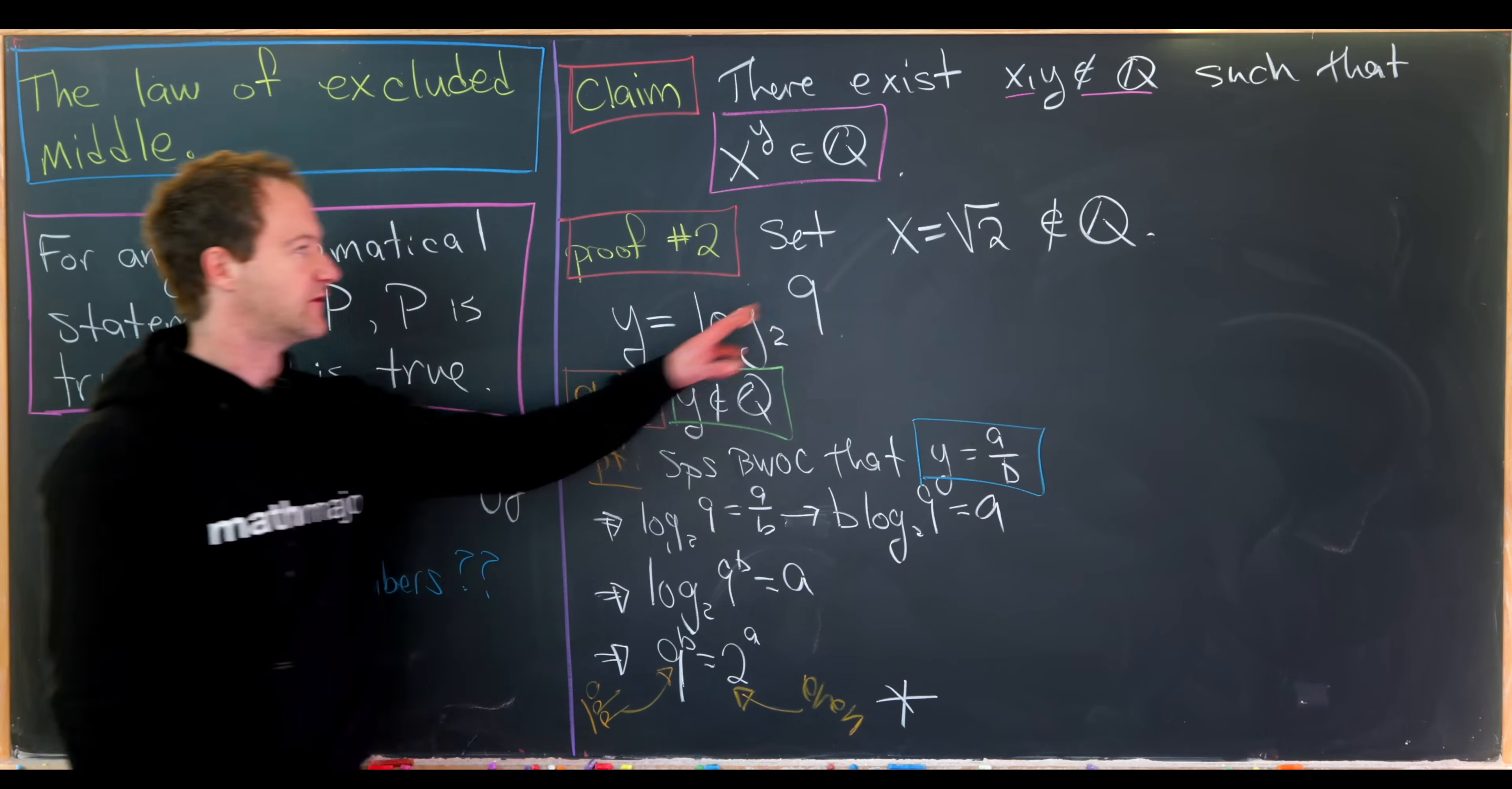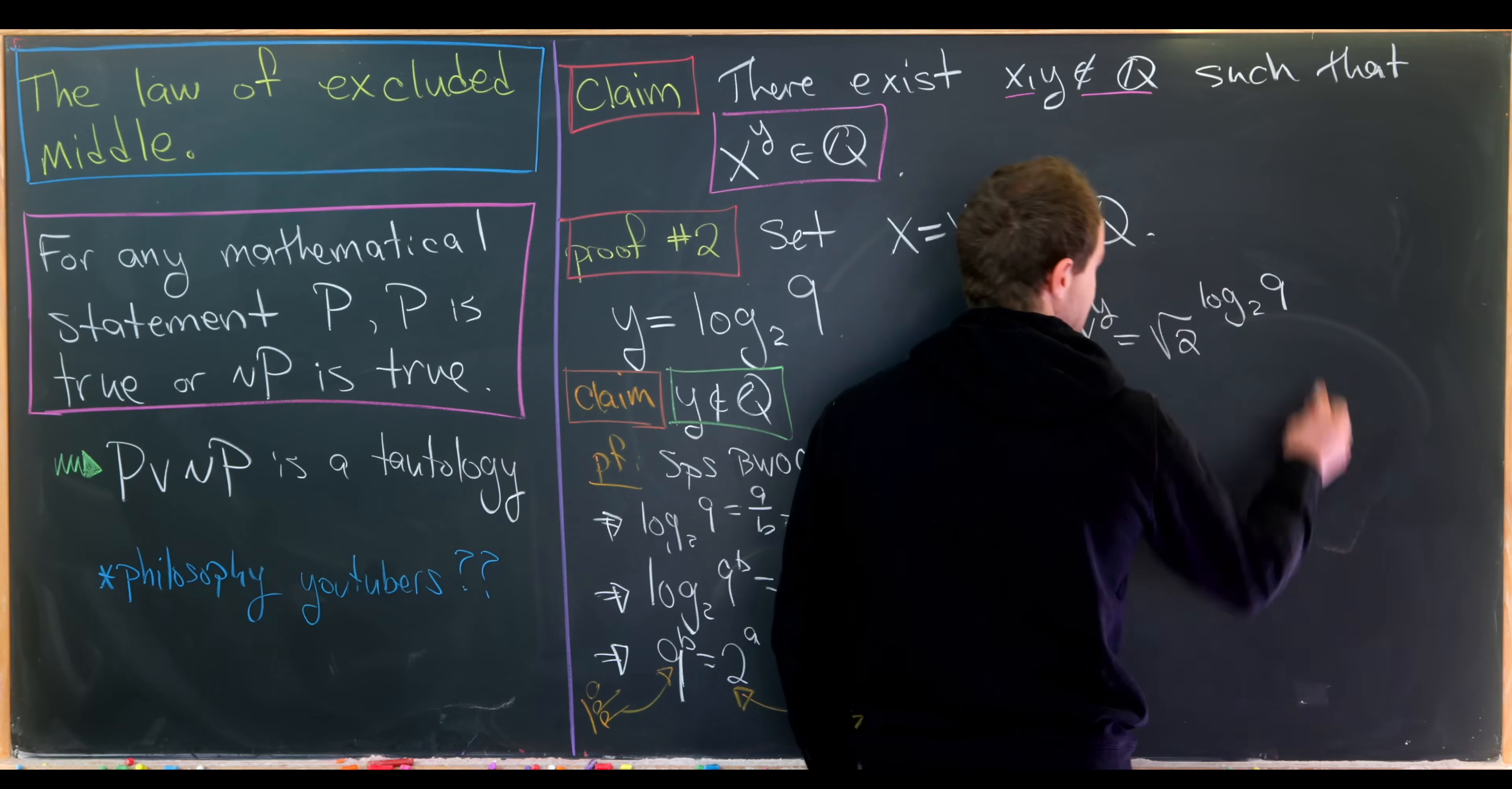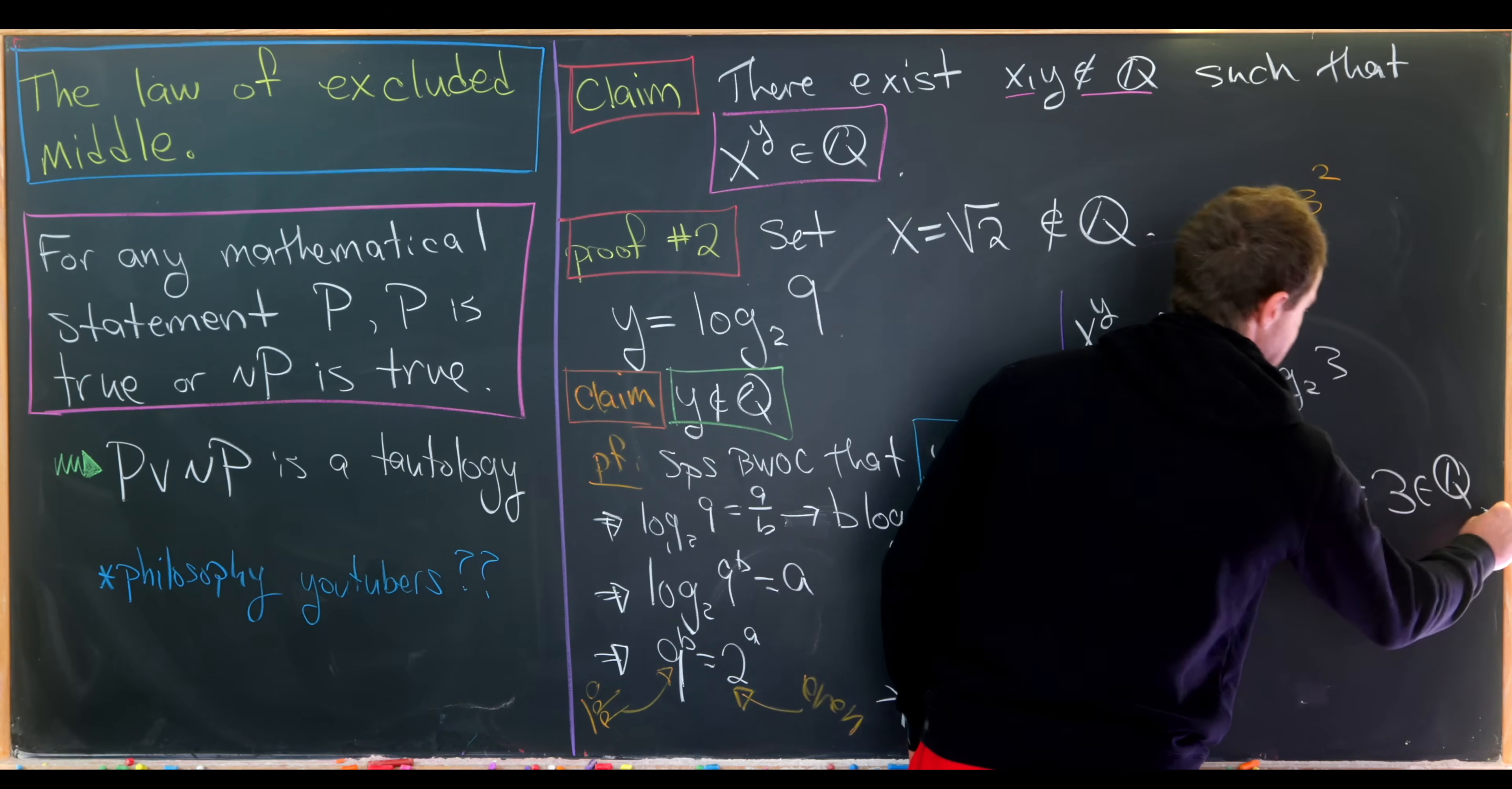Okay, so now we've got two irrational numbers x and y. And now we're ready to exponentiate them to make sure that we get a rational number. So let's do that. Let's look at x to the y power. So this is the square root of 2 to the log base 2 of 9. But now we can write 9 as 3 squared and use exponent rules to rewrite this as square root of 2 to the 2 times log base 2 of 3. But again, that's going to simplify down to 2 to the power log base 2 of 3, which is the number 3, which is clearly rational.